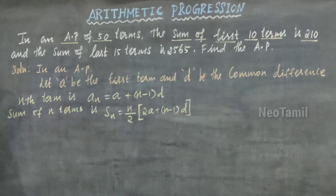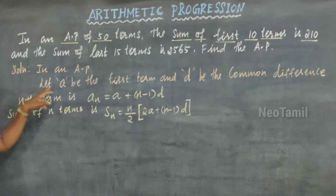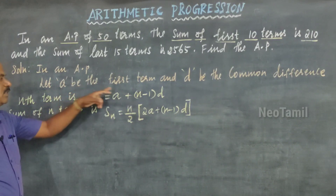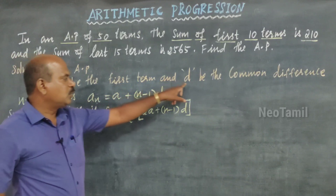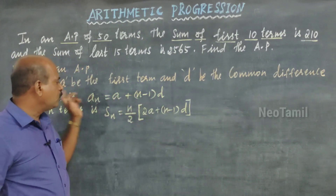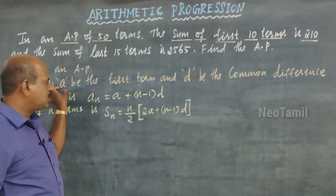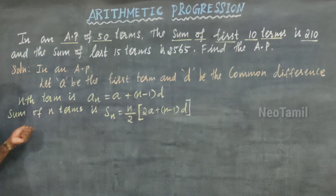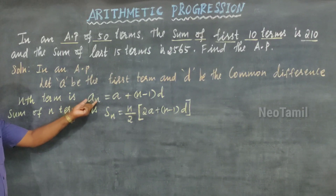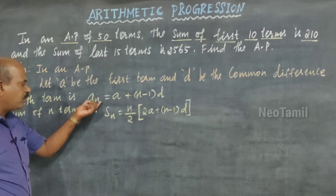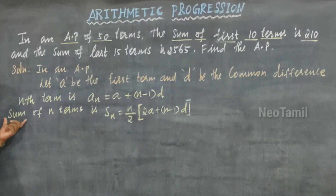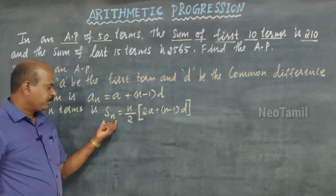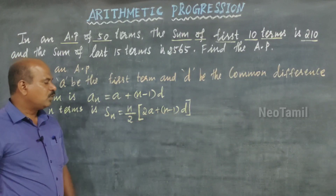I am going to start the solution. Let small letter 'a' be the first term of the arithmetic progression and small letter 'd' indicate the common difference. The nth term of an AP is: a_n = a + (n−1)d. The sum of n terms of an AP is: S_n = (n/2)[2a + (n−1)d]. These two formulas are very important for solving this problem.